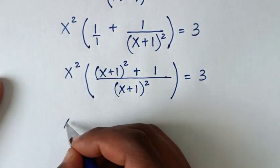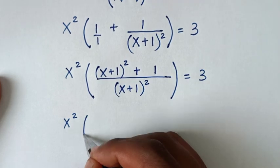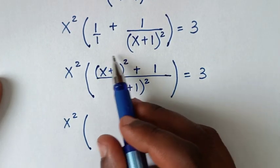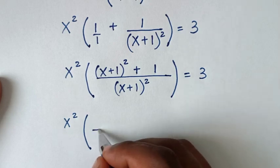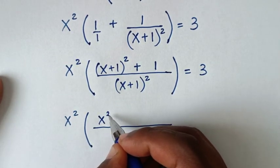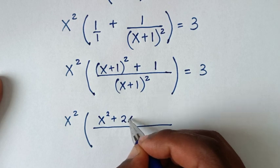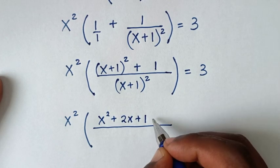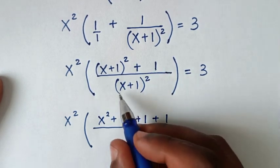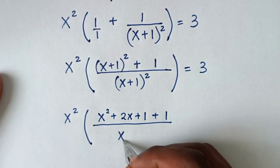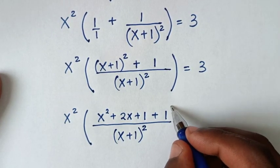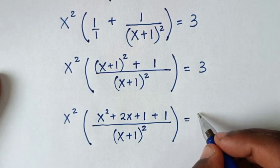In the next step it will be x² times the bracket. We expand (x+1)², which gives x² + 2x + 1, then plus 1, over (x+1)², bracket equals 3.